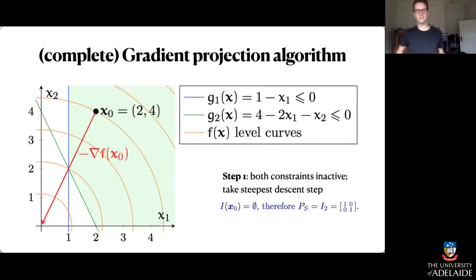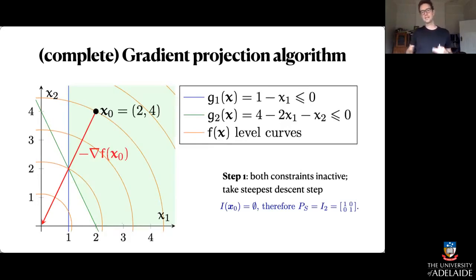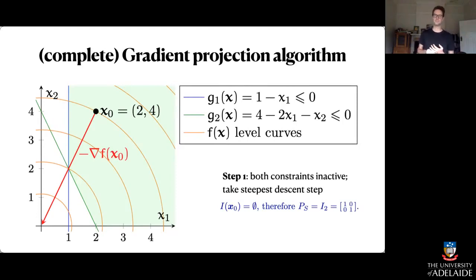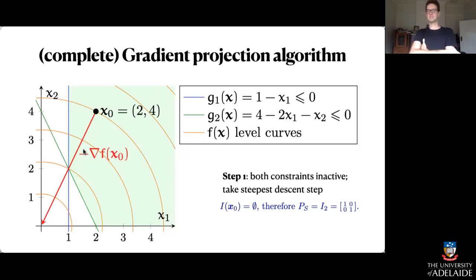Starting at (2, 4), the first step of gradient projection is going to be essentially steepest descent — exactly steepest descent. The reason for that is when I form my projection matrix PS, that turns out to be the identity matrix because x0 is in the interior of the feasible region, meaning both constraints are inactive. So I just take a steepest descent step straight towards the origin.